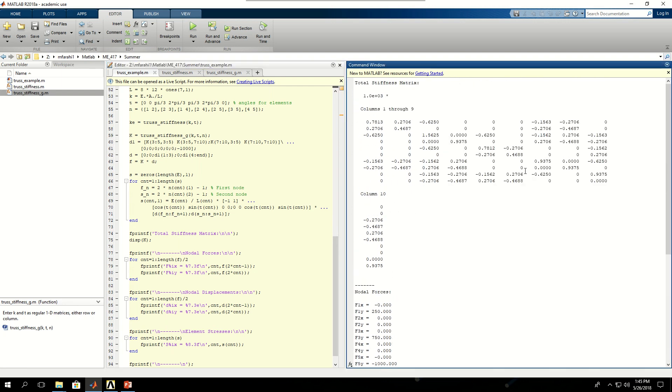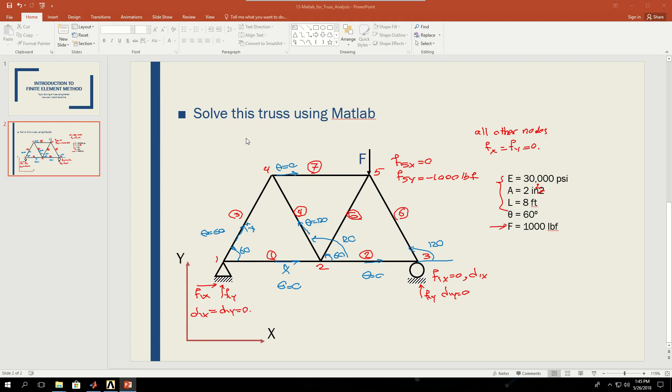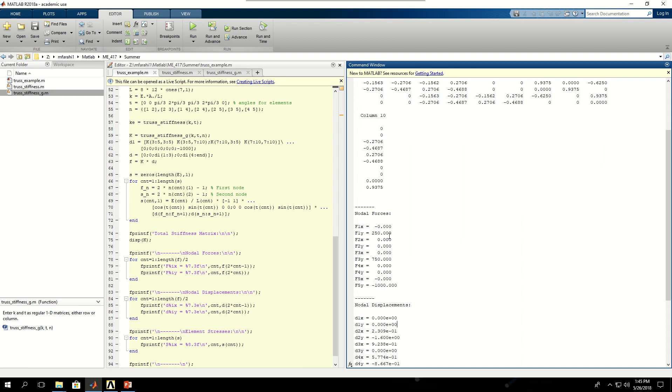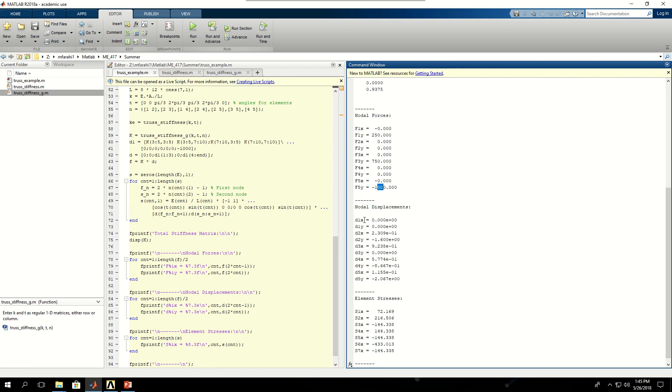First, it prints the total stiffness matrix as a 10 by 10, and because we have five nodes and each node has two degrees of freedom, I expect to have a 10 by 10 stiffness matrix. And then it gives me the nodal forces. So I know that f5y was minus 1,000, and I'm expecting that the summation of forces be 0. I have 250 there, 750 here in the y direction, add them would be 1,000, and would cancel this minus 1,000. And then the nodal displacements are shown here for me.